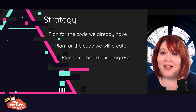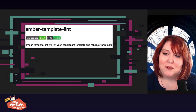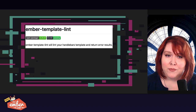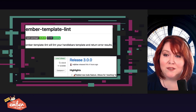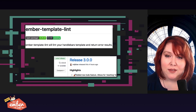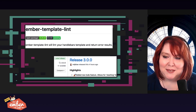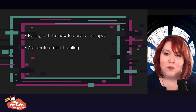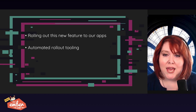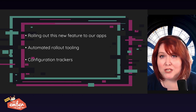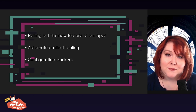Before we dive into that, I have some exciting news to share. We have already started on this continuous accessibility journey with the newest version of Ember Template Lint. As of the latest version, no longer in beta, we deliver template linting in such a way that it ensures our code has a path to become more accessible if it already exists, and that our future code will be more accessible by default. At LinkedIn, we have manually rolled out this feature to some of our apps already in production. We also took what we learned through manual implementation and built automated tools to do this work in the future. And we are also building trackers to ensure that the configurations remain correct over the lifetime of the code base.